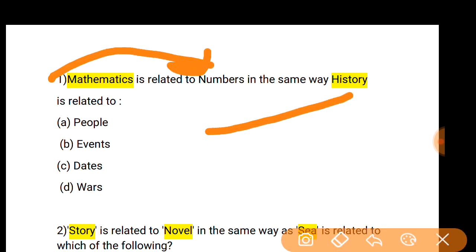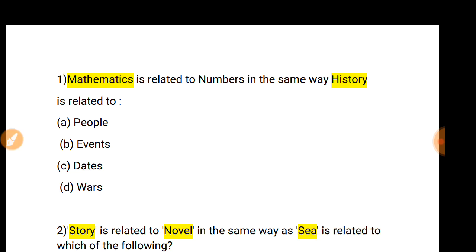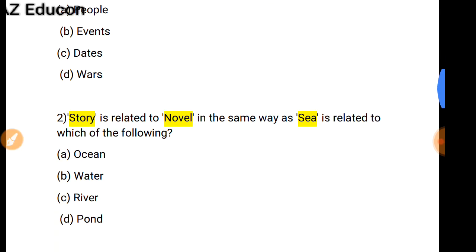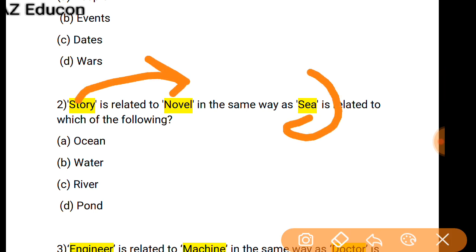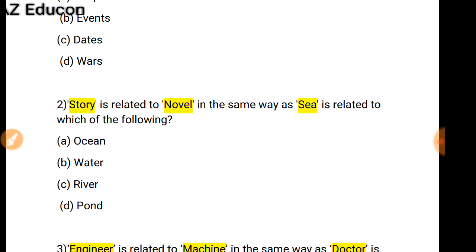History is related to what? History is related to events, because events are occurring in history — so 'event' is the correct option. Next: Story is related to Novel, so 'She' is related to what? She is related to Ocean.